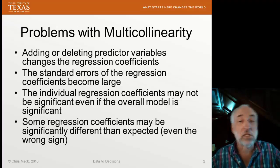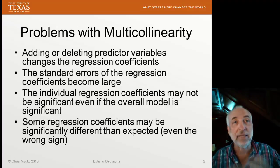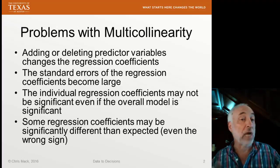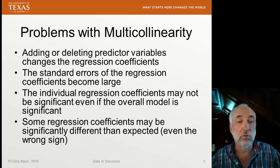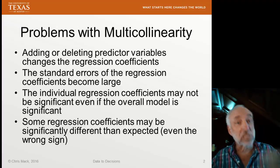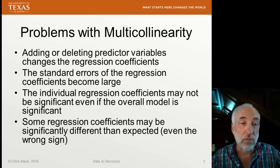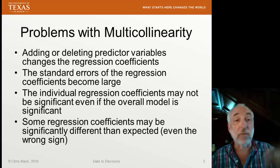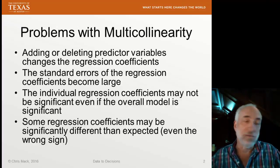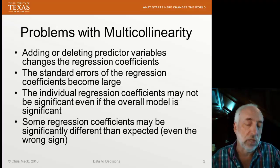And finally, you might notice that some regression coefficients are different than what you'd expect. Maybe you have some idea that certain coefficients should be positive, and then when you actually do the regression, you find it's negative. Or, when you add or delete predictive variables, the sign of one of the remaining regression coefficients flips from positive to negative. None of this really makes any sense — this is what happens when you have multicollinearity.